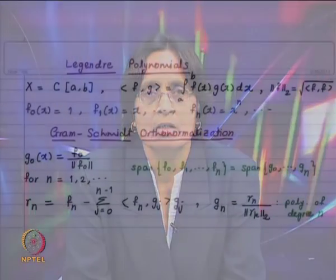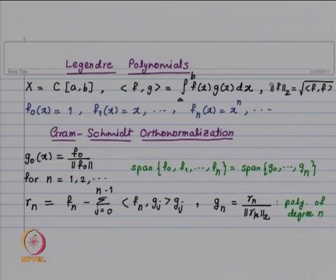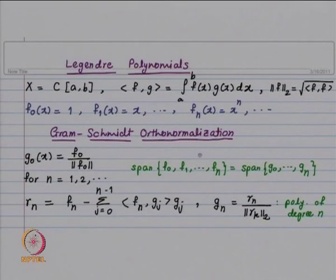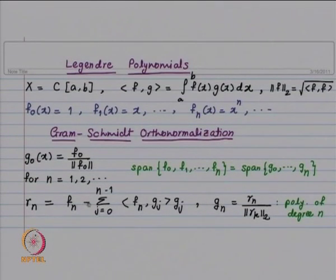Our setting is X = C[a, b]. We have the inner product of f and g defined as the integral from a to b of f(x)g(x) dx. We look at the functions f₀(x) = 1, f₁(x) = x, fₙ(x) = xⁿ, and so on. The norm of f is the induced norm, denoted ‖f‖₂ = √⟨f, f⟩, the positive square root. The Gram-Schmidt orthonormalization gives g₀(x) = f₀ / ‖f₀‖, and for n = 1, 2, ..., the function rₙ = fₙ − Σⱼ₌₀ⁿ⁻¹ ⟨fₙ, gⱼ⟩ gⱼ.